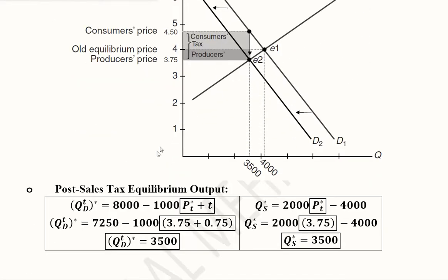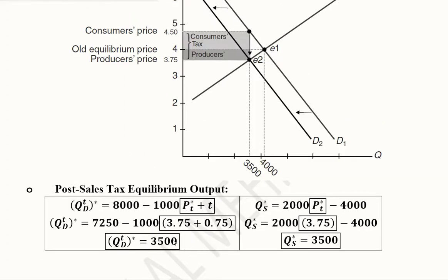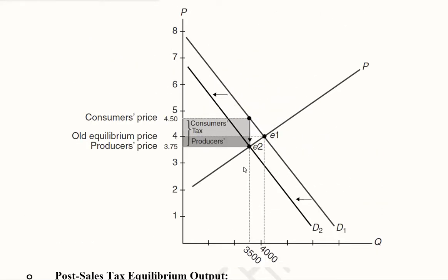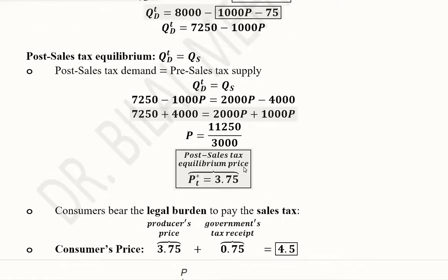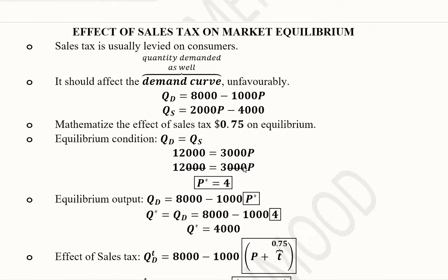We can further verify the post-sales-tax equilibrium output of 3500 by calculating it using both the post-sales demand function and the pre-sales supply function — this DIY is already solved but you can rehearse it yourself. In this way we can analyze the effect of a sales tax on the consumer and determine the new market equilibrium price and output. In the next video, we will analyze the tax levied not on consumers but on suppliers.